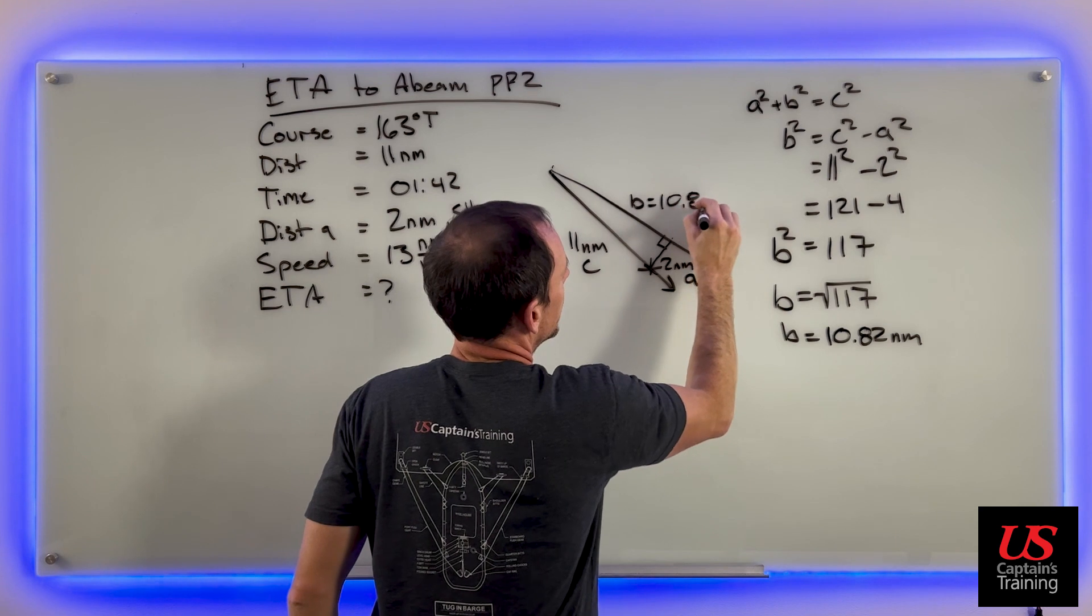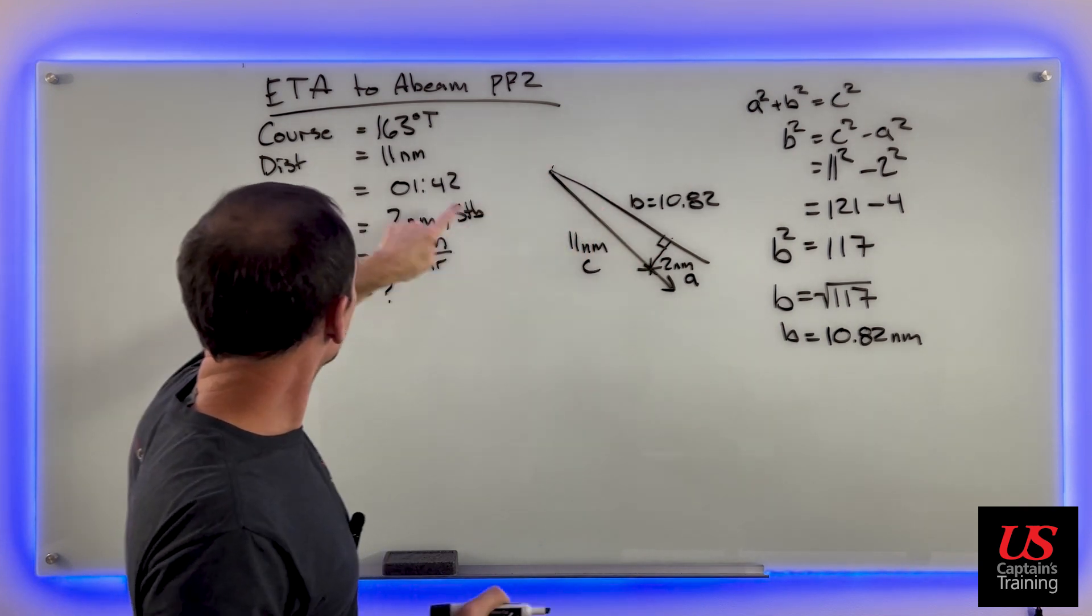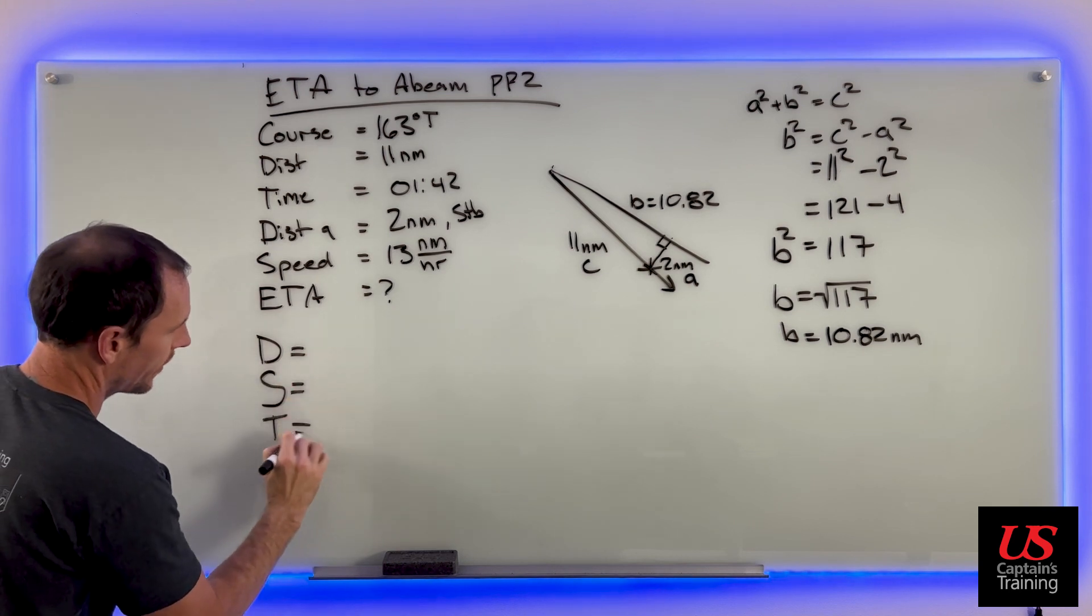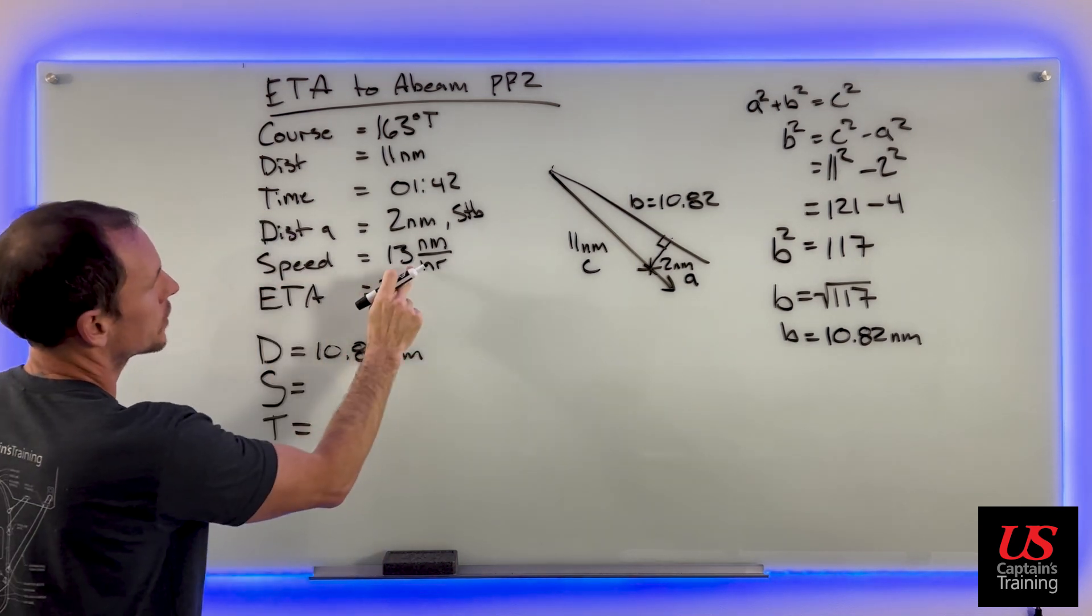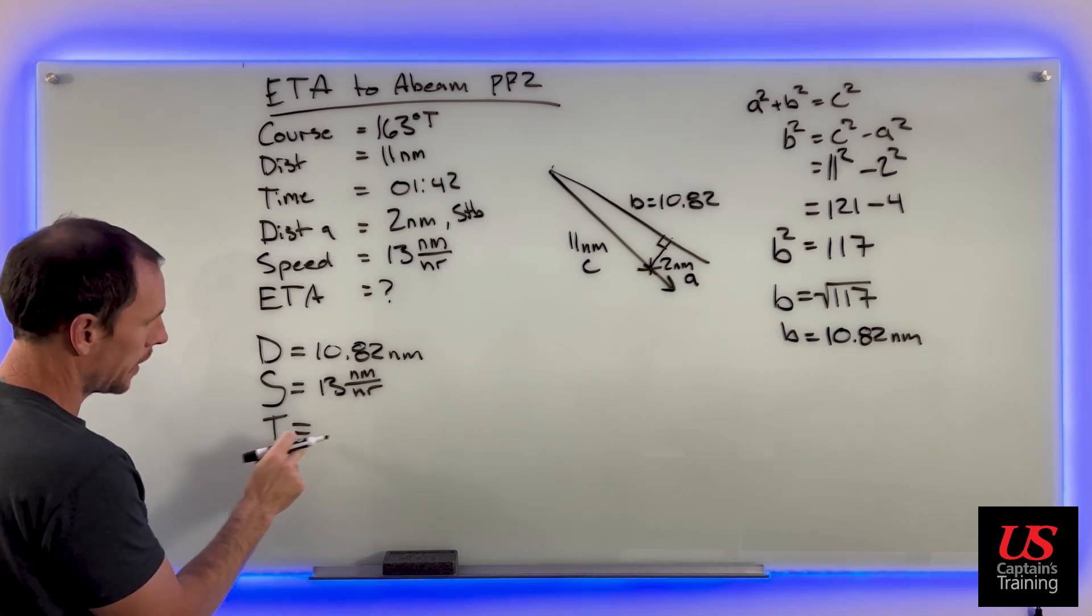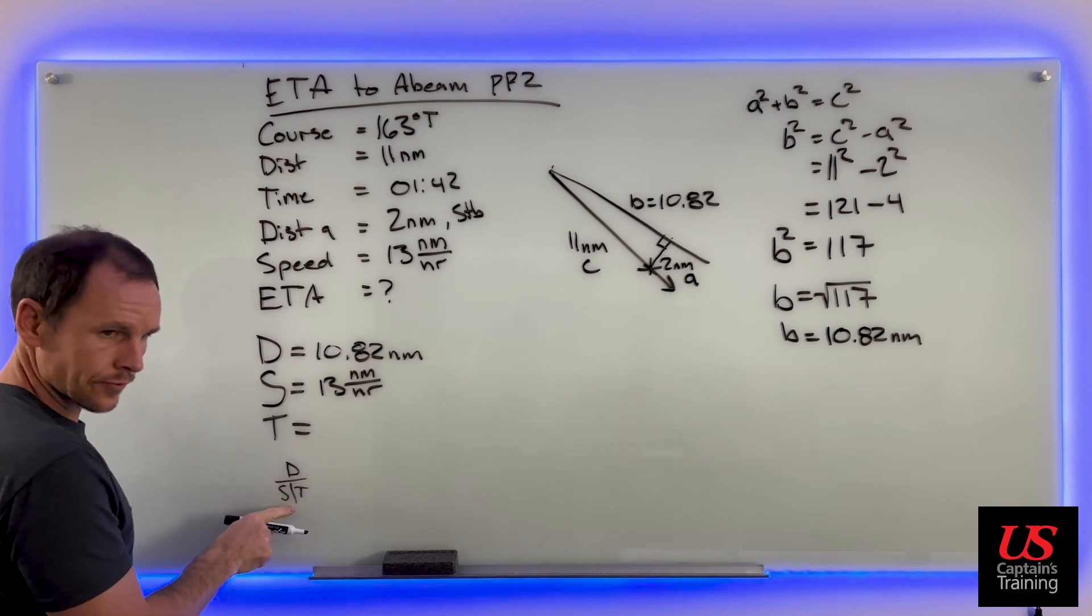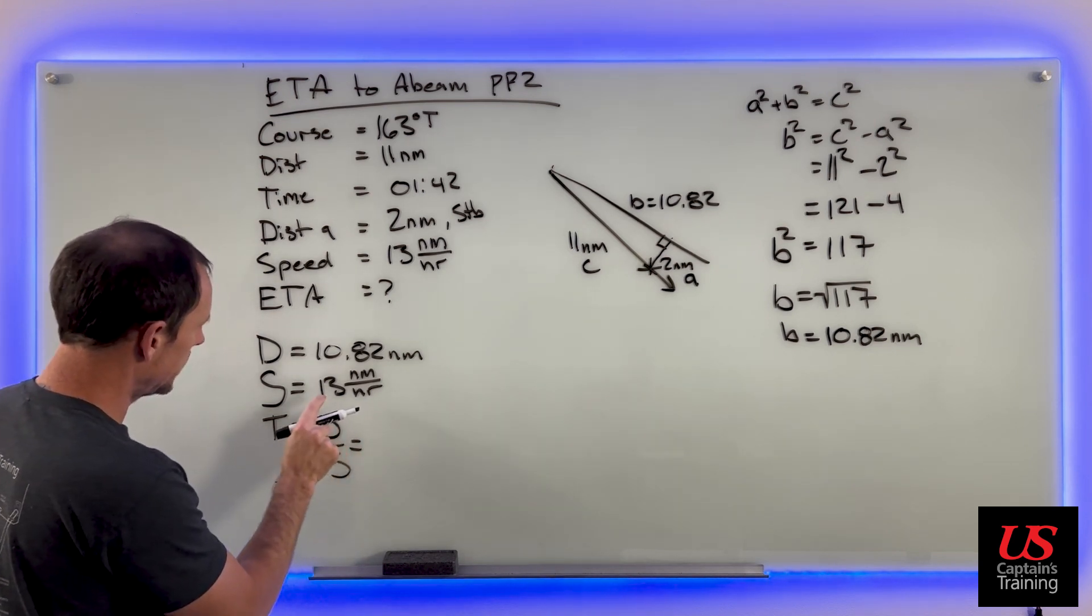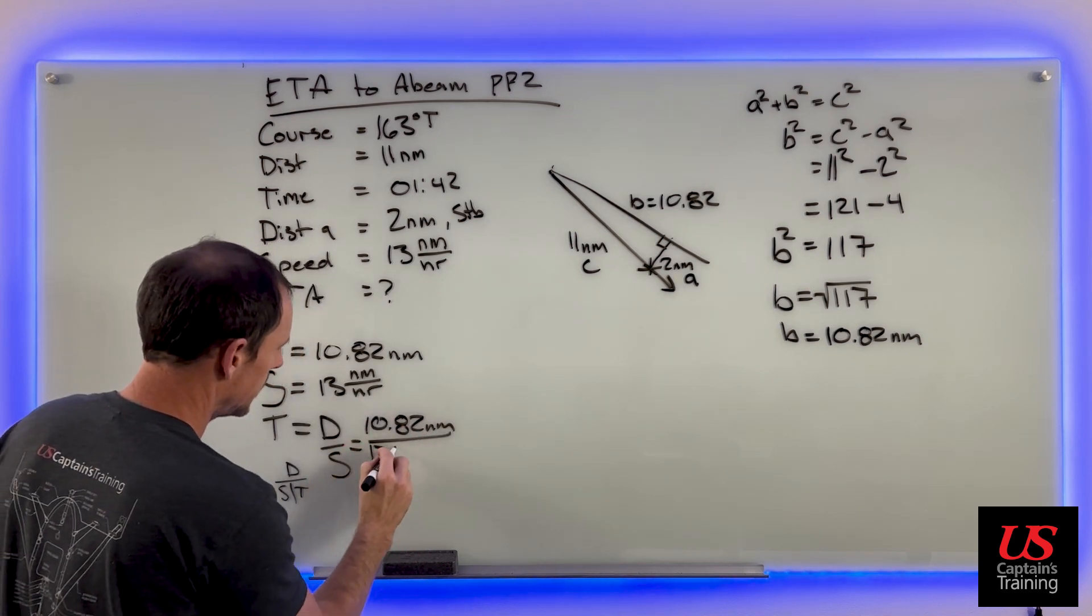So it equals 10.82, and that means we can get the ETA. We need to get a time and add it to this time. We do what we call d streets - distance, speed, and time. We just figured our distance, 10.82 nautical miles. Speed - what's our speed? 13 nautical miles per hour. To get time, it's distance over speed. So distance over speed: 10.82 nautical miles divided by 13 nautical miles per hour.